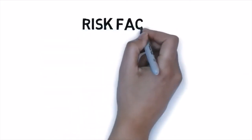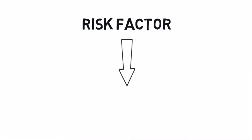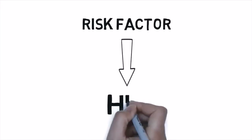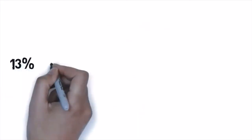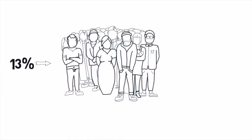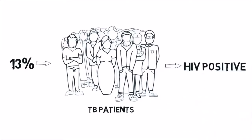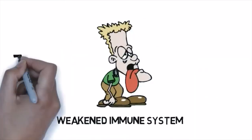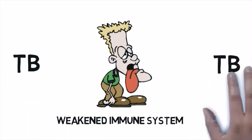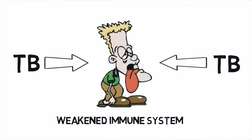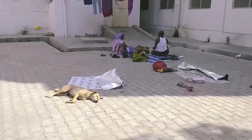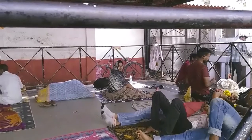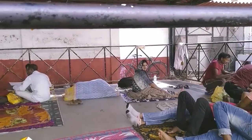The most important risk factor for TB globally is HIV — 13% of all people with TB are affected by the virus. A weakened immune system poses the threat of developing TB disease. TB is also linked to overcrowding and malnutrition, making it one of the principal diseases of poverty.